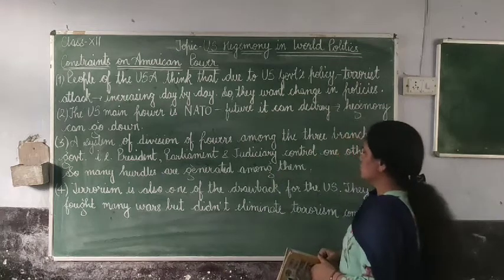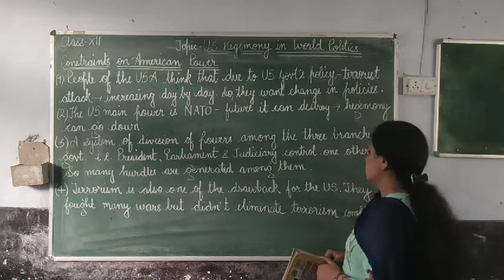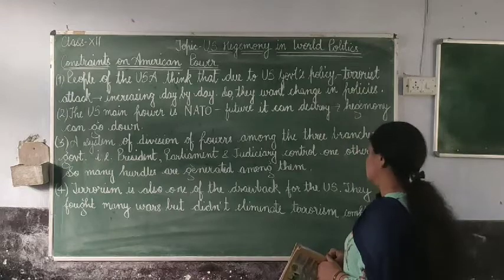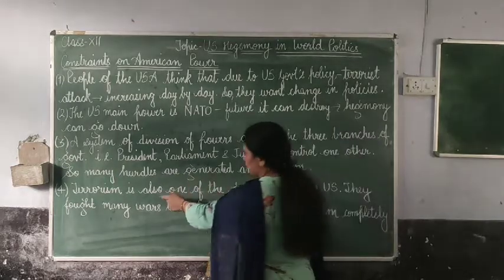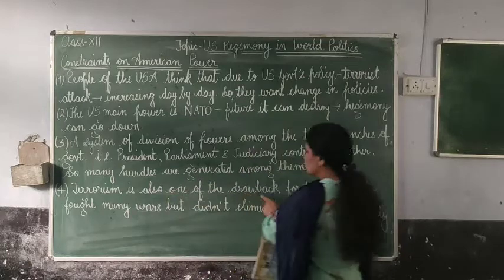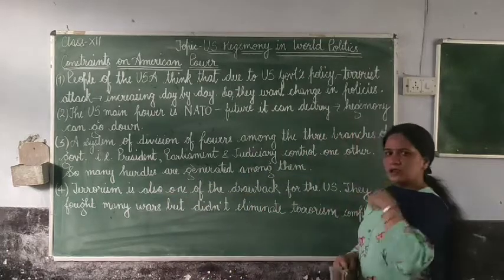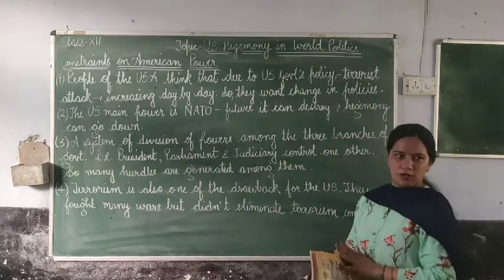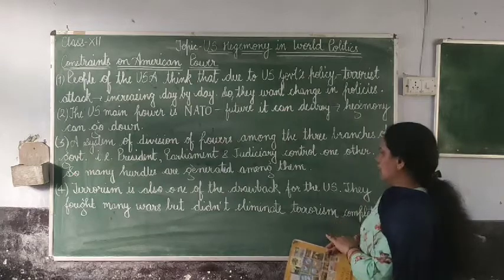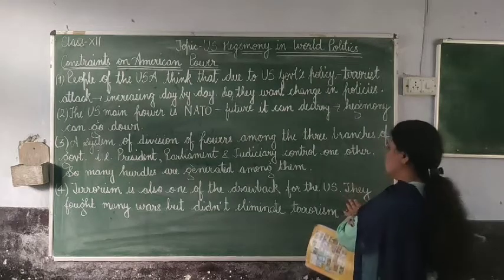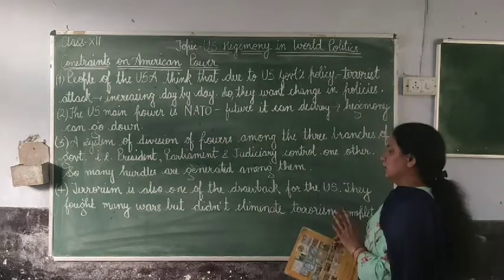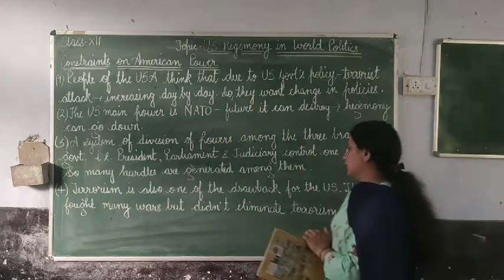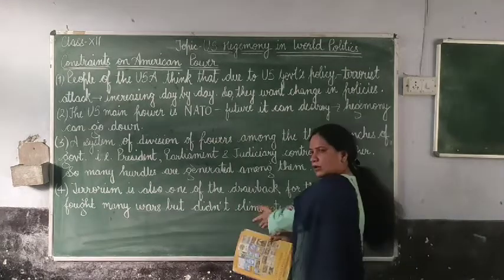Next, terrorism is also one of the drawbacks or constraints on the US. They fought many wars but they didn't eliminate terrorism completely. The US government said that many wars have been fought but at the end they were not able to eliminate terrorism completely.